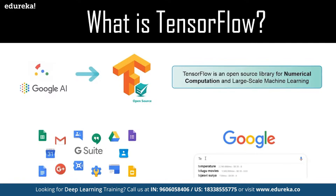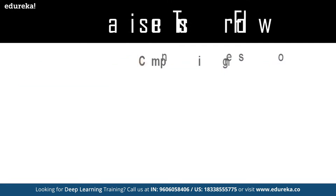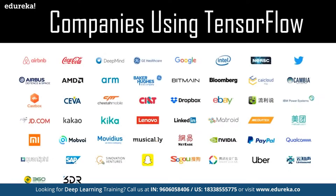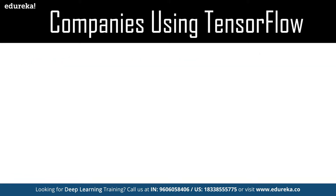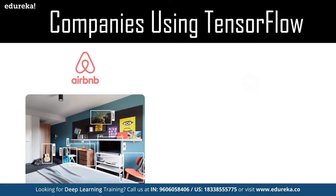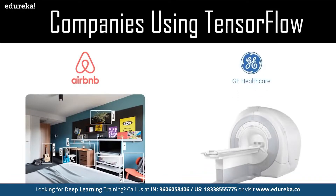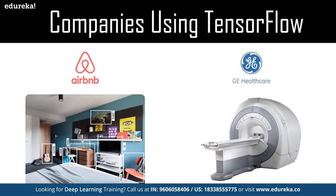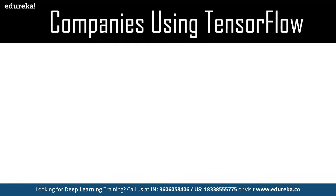TensorFlow is being used by many companies across industries. Airbnb, the leading global online marketplace and hospitality service, applies machine learning using TensorFlow to classify images and detect objects at scale, helping to improve the guest experience. In healthcare, GE Healthcare is training a neural network to identify specific anatomy during brain MRI exams to help improve speed and reliability.